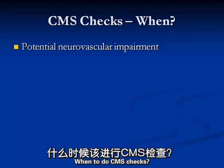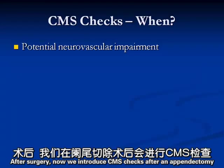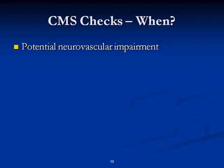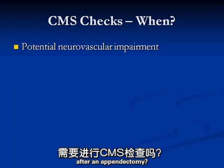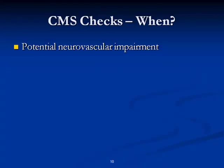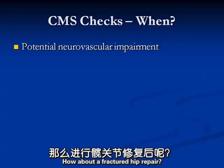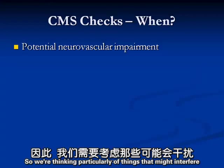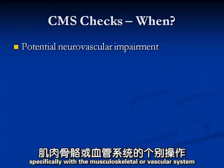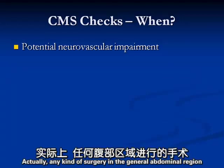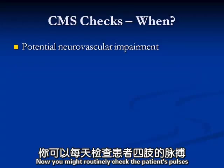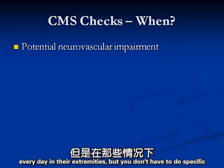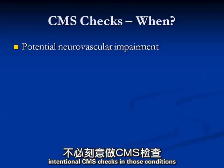When would you do CMS checks? After surgery - but would you do CMS checks after an appendectomy? Not specifically. How about after a fractured hip repair? Yes. We're thinking particularly of things that might interfere specifically with the musculoskeletal or vascular system. Any kind of surgery in the general abdominal region, you probably don't have to specifically do CMS checks. You might routinely check pulses in the extremities every day, but you don't have to do intentional CMS checks in those conditions.